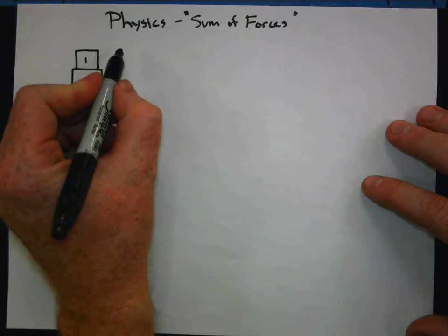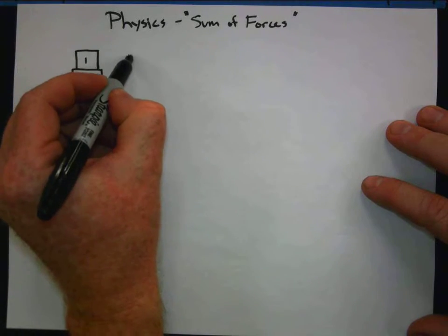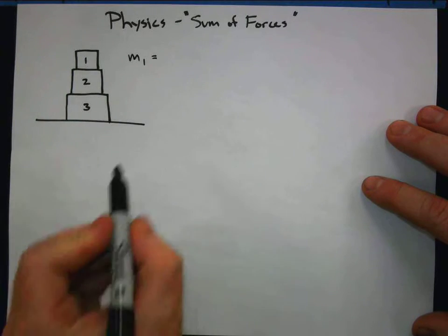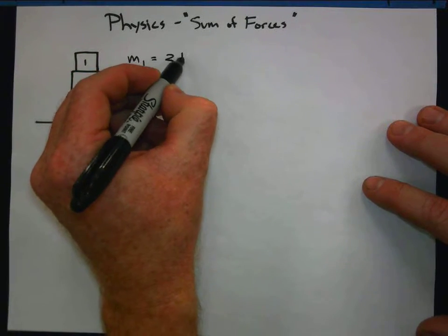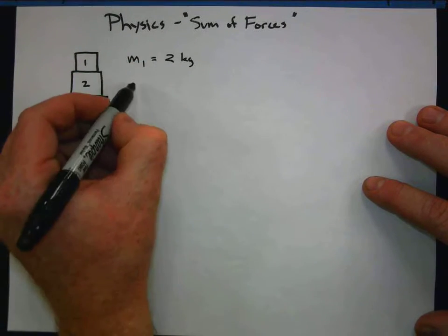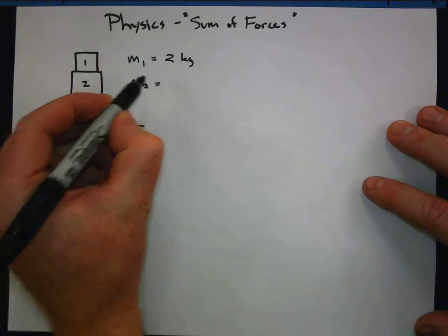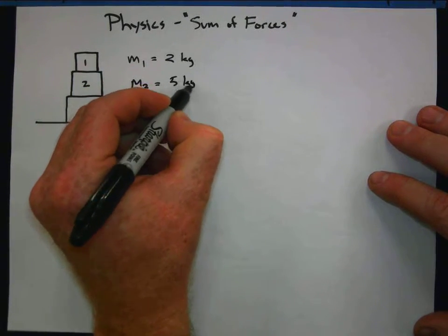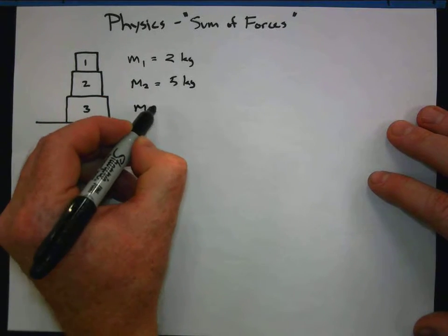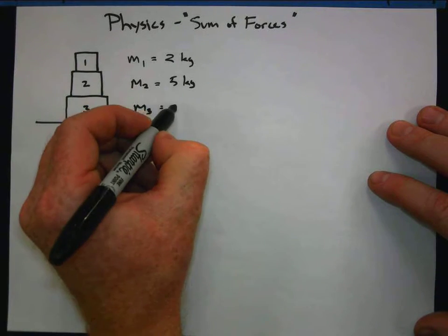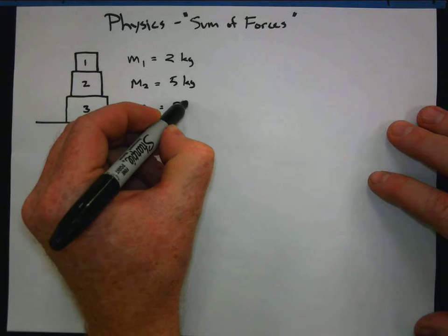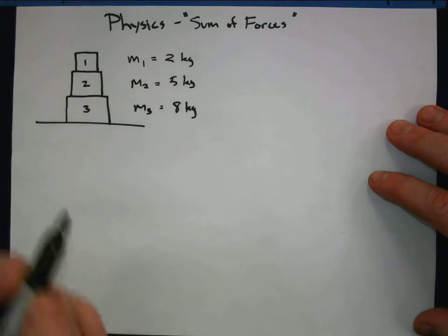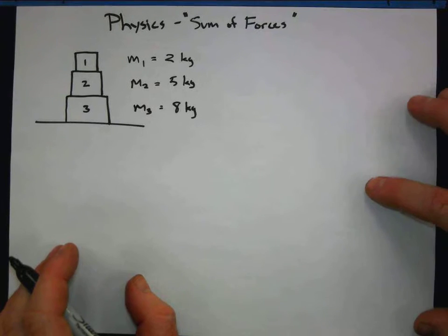And each of these boxes will have different masses. Mass of box one, let's call that, let's give it a mass of two kilograms, just because. Mass of box two, that's going to be, let's go five kilograms. Mass of box three, let's give them a mass of eight kilograms. No problem there, easy enough.